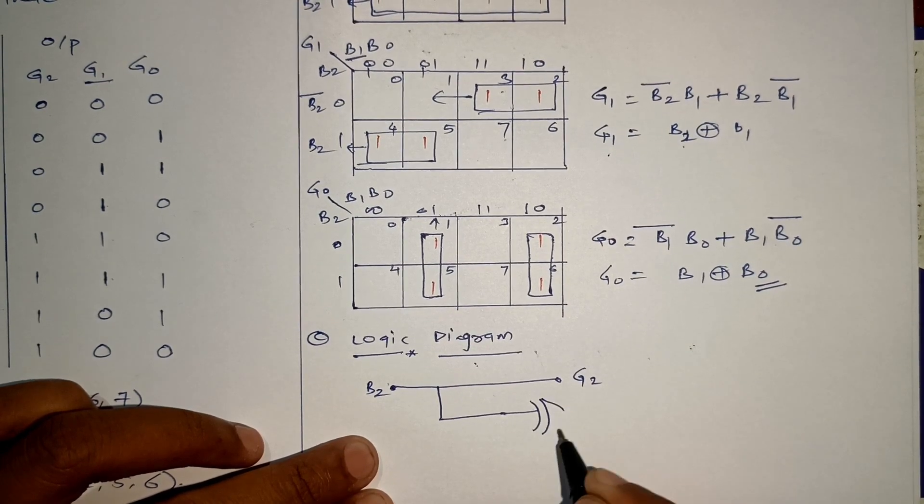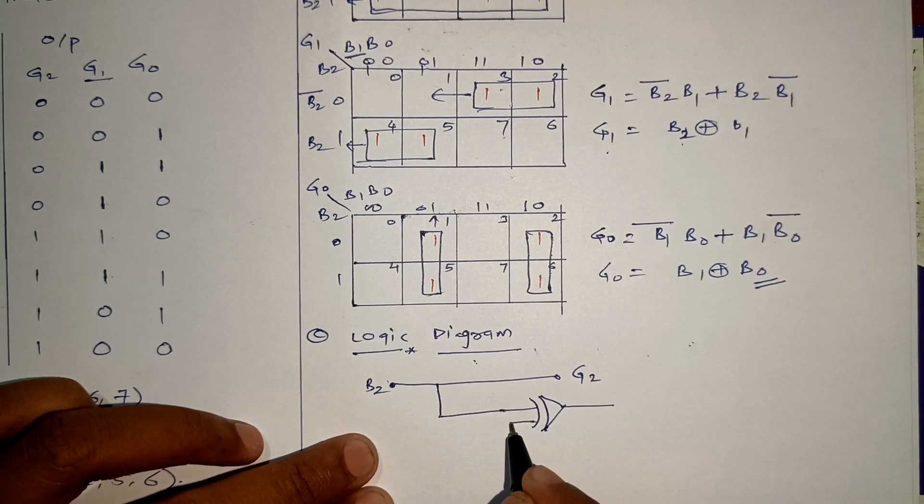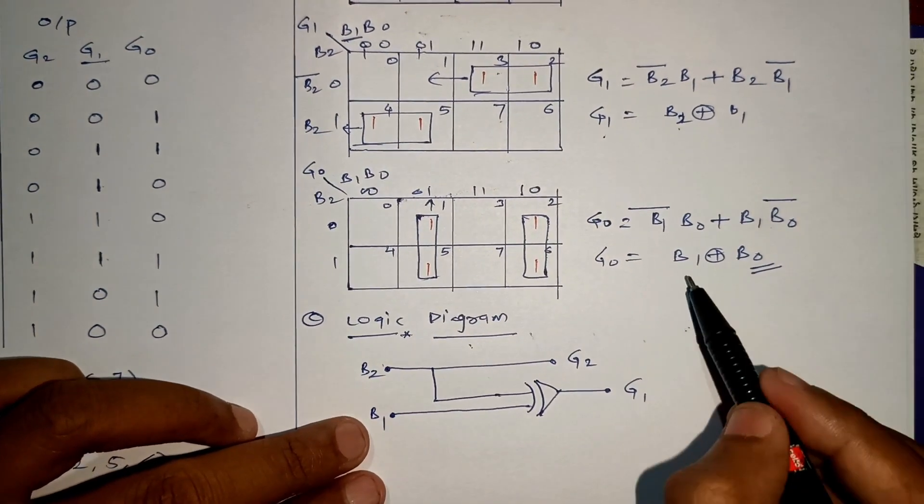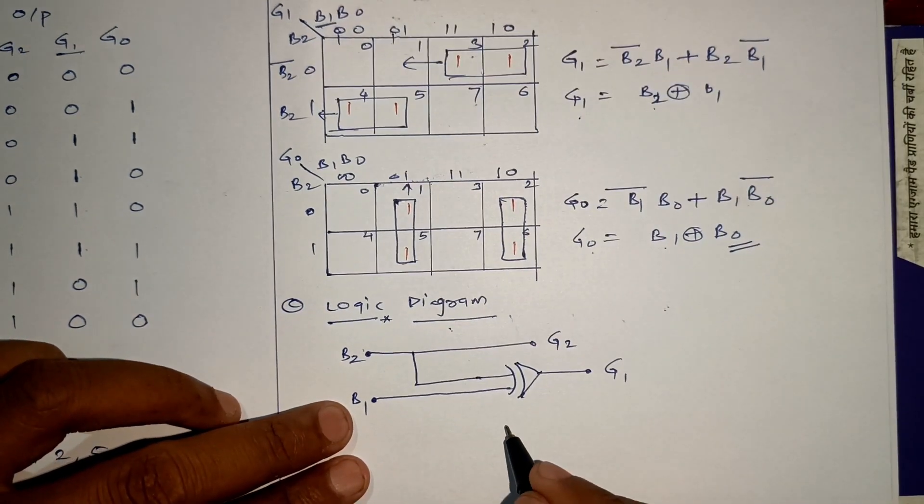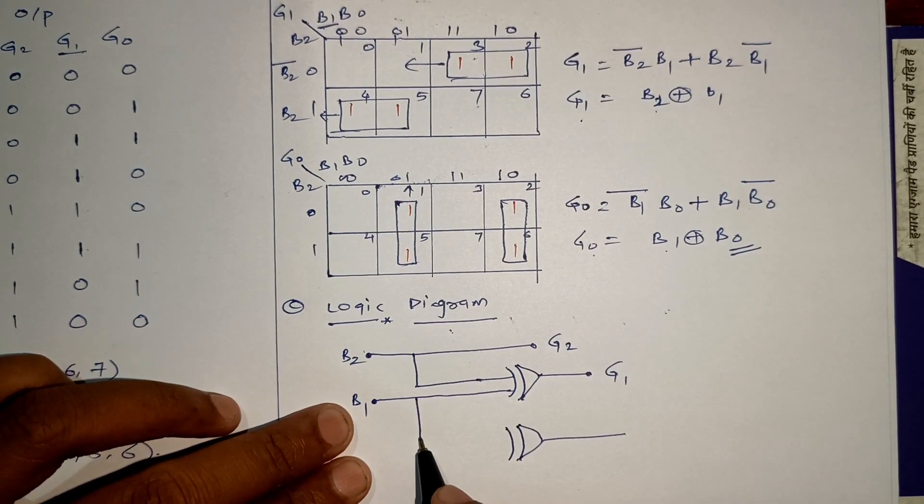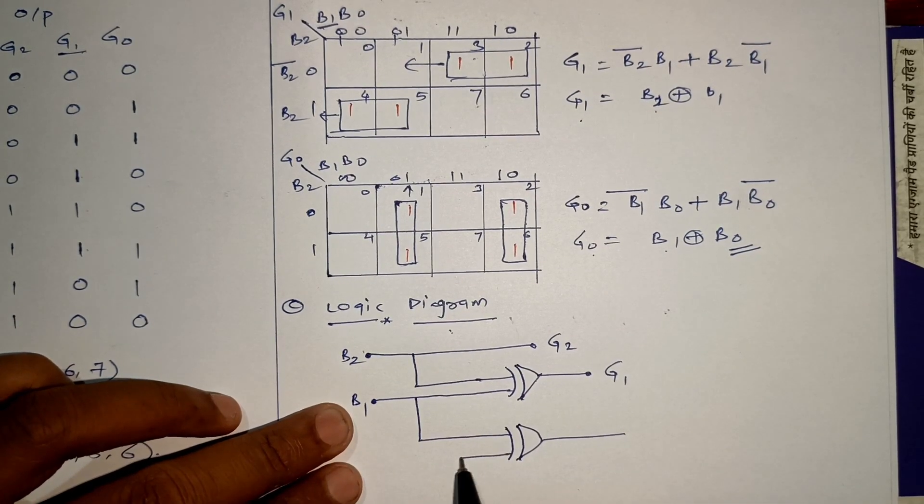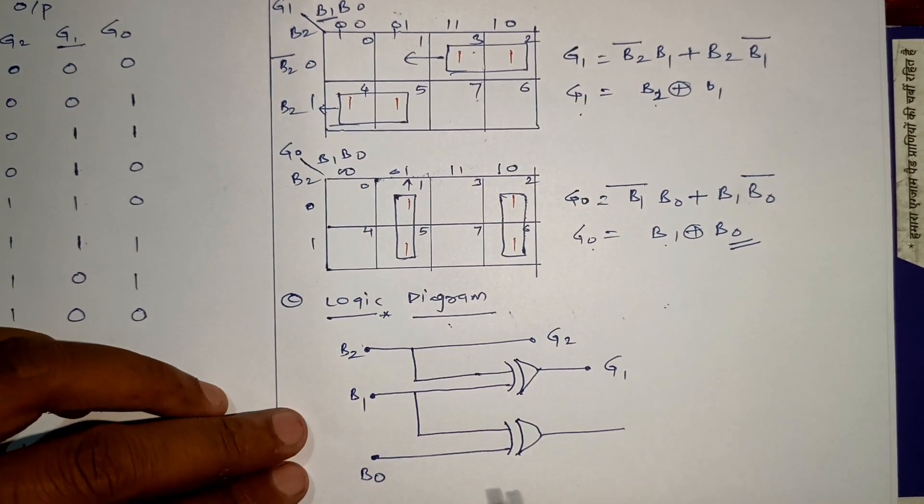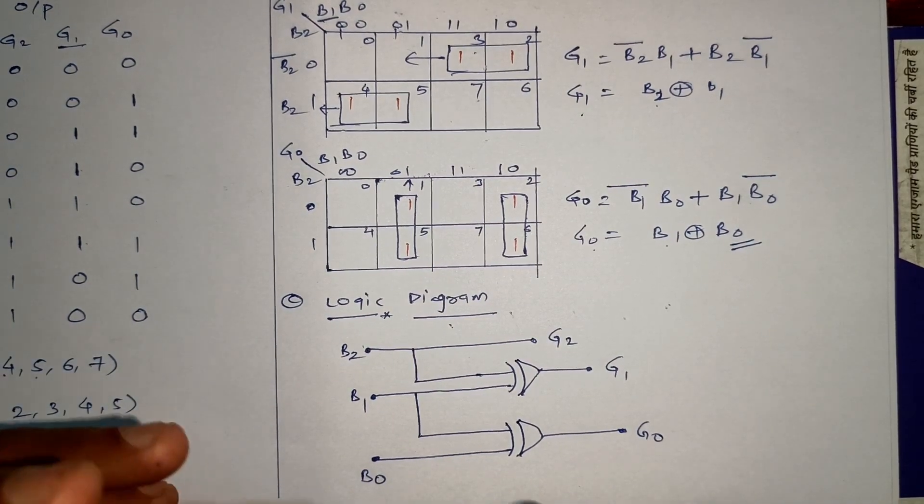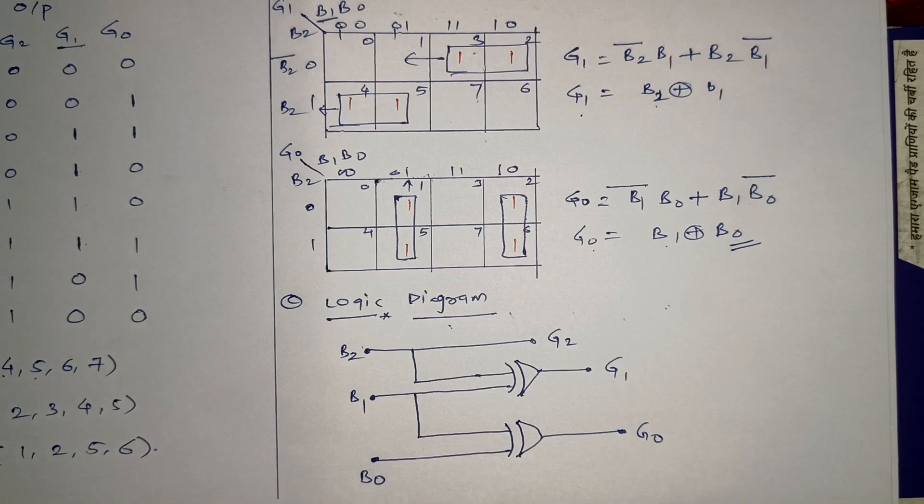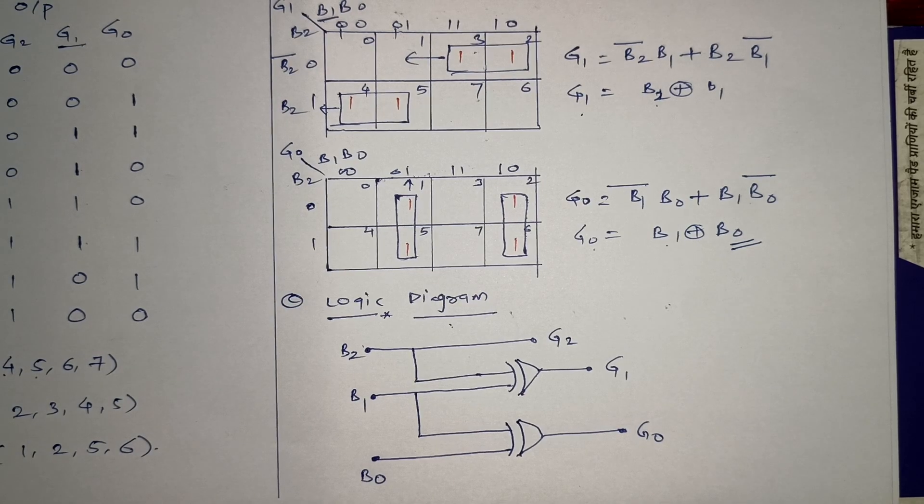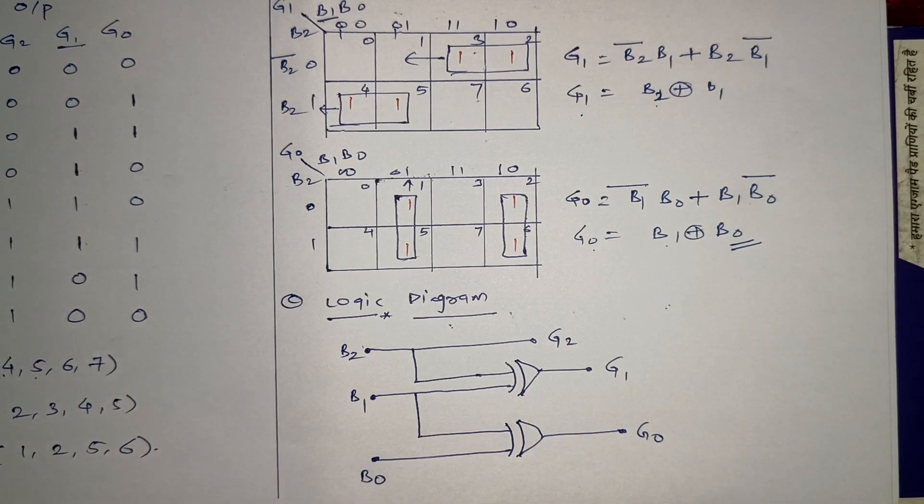Next, G0 is B1 XOR with B0, so we have to use another XOR gate, one input from B1 and the third input from B0. So this will be our G0. This will be the logic diagram for converting 3-bit binary to gray code converter circuit. I hope you understood this concept. In the next video we will see how to convert gray to binary. Thank you.